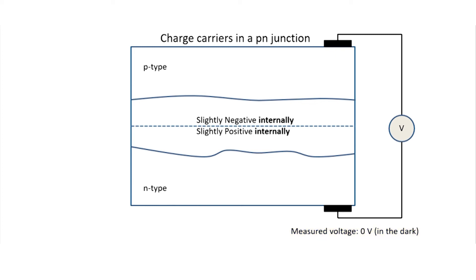Near the junction, the p-type side is slightly negatively charged and the n-type side is slightly positively charged. But that's only the case near the junction. There's no electric field that can be measured externally with a voltmeter.